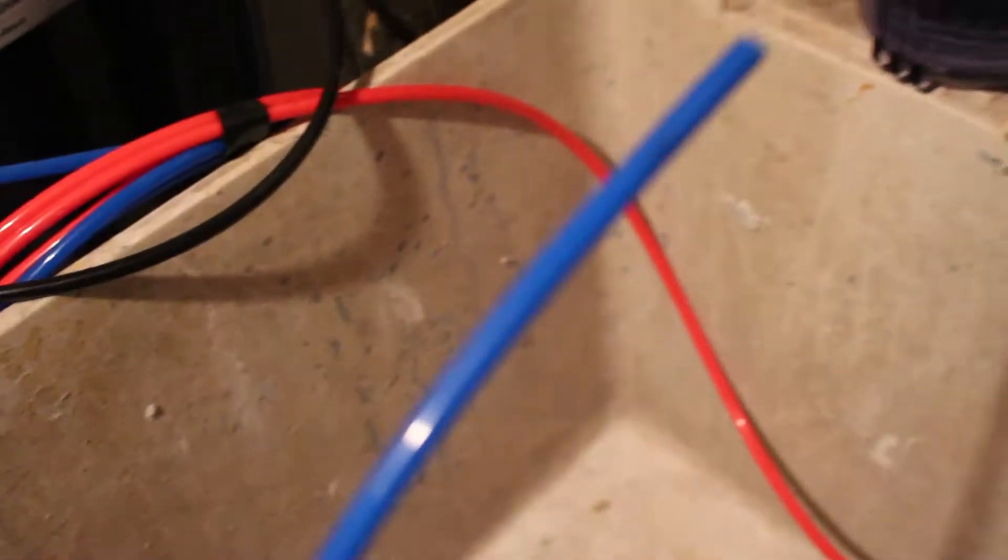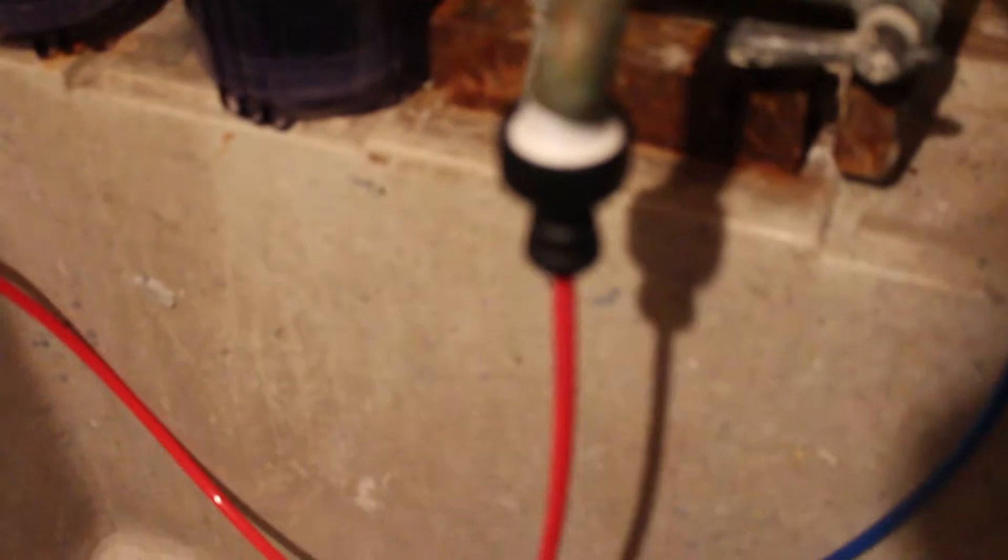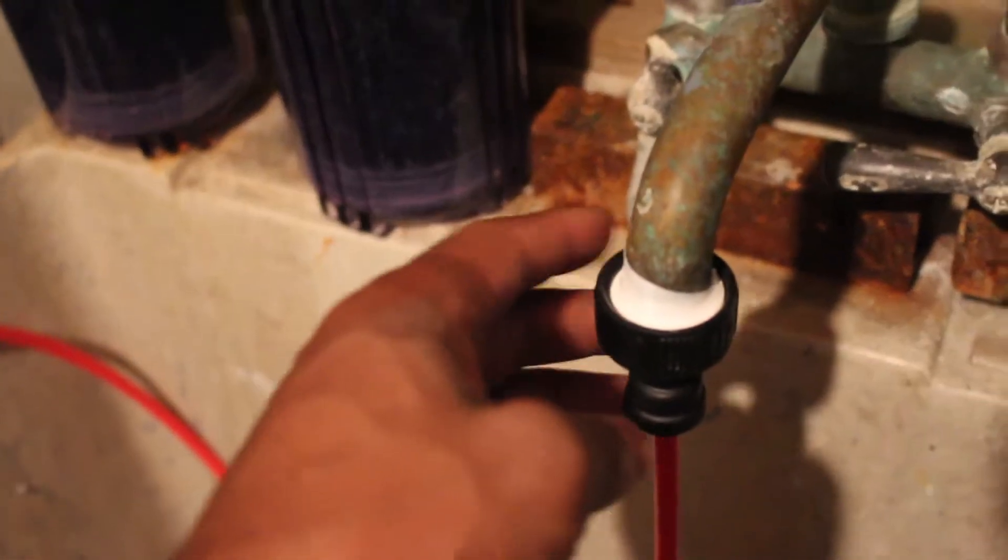So the black tubing is for your drain water. Blue tubing is for your clean water and the red tubing connects to your water source.